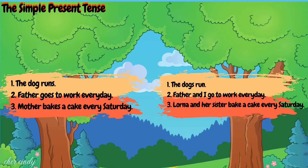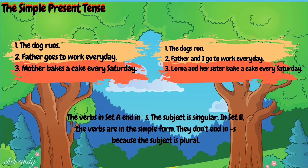Now let's observe sentences in column A and column B. In column A: number 1, the dog runs; number 2, father goes to work every day; number 3, mother bakes a cake every Saturday. The verbs in set A end in S because the subject is singular. In set B, the verbs are in simple form — they don't end in S because the subject is plural.